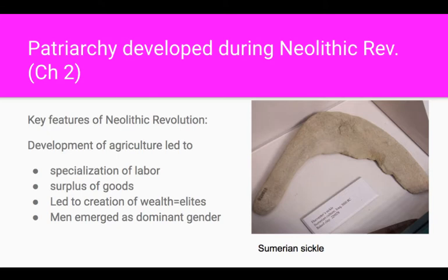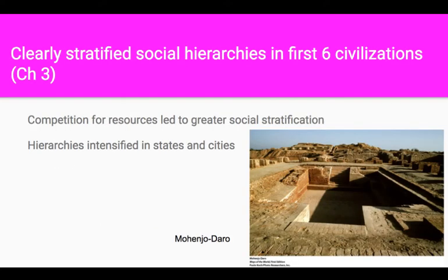Men take on what are perceived as more important tasks than the ones women are doing. So by the first six civilizations, we do have clearly stratified hierarchies. There is competition creating even greater social stratification. In these new developing political systems, power is concentrated in the hands of the elites, and so in all of those civilizations — both states and city-states — we get the intensification of social hierarchies.